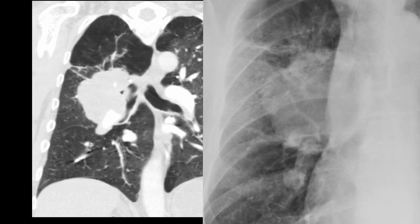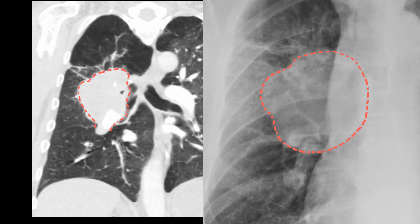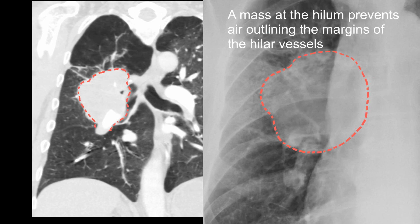Here is a lesion in the lung which is right up against the hilum, and therefore obscuring the ability to see the blood vessels. This is seen very nicely on the chest radiograph where the hilar blood vessels have been obliterated because the mass lesion is right up against the hilar structure. A mass at the hilum prevents air outlining the margins of the hilar vessels — this is the opposite of the hilum overlay sign.